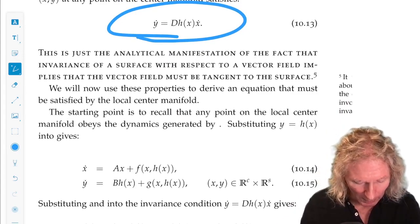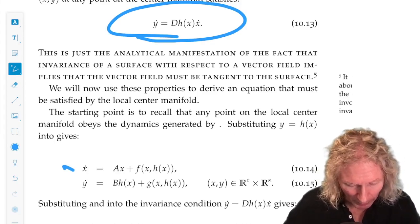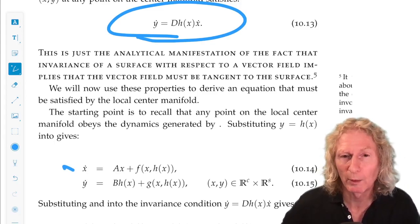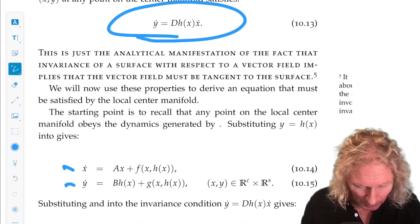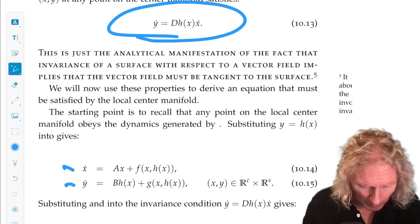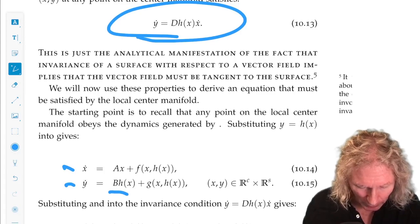So, x-dot is Ax plus f of (x, h(x)), and y-dot is, let's write it this way for the moment, Bh(x), g of (x, h(x)).